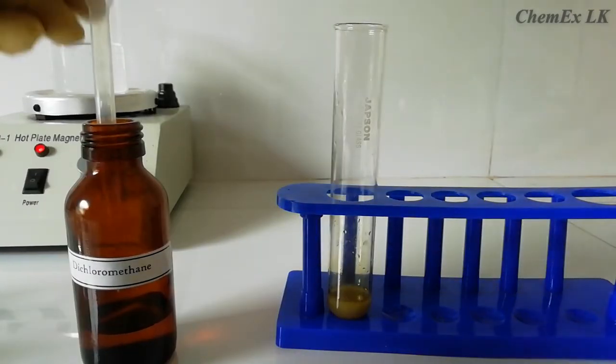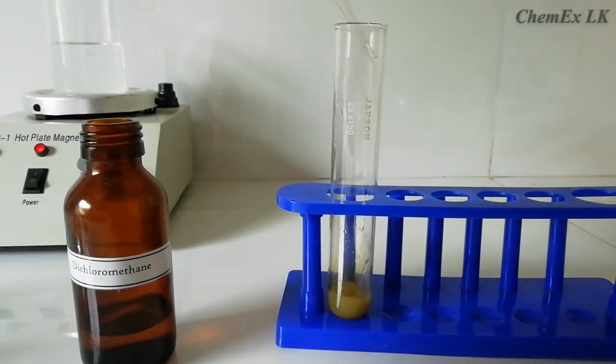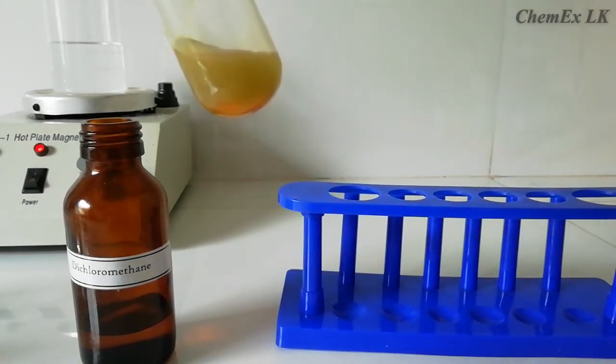Now we need to add about 1 milliliter dichloromethane, also known as DCM. In the addition of DCM, we can see a layer separation.